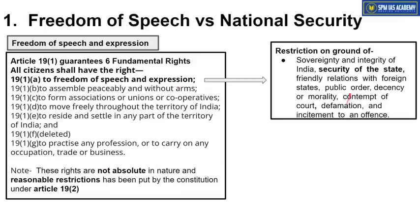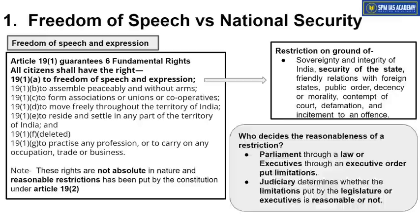Defamation ek point hai. Security of the state — desh ki antarik suraksha ya overall suraksha — that is also a basis on which reasonable restriction can be put on freedom of speech and expression. Now, Parliament has the power to make laws imposing restrictions on different kinds of freedom provided under Article 19(1). Executives also have the power through executive orders to impose limitations on certain rights under Article 19(1).